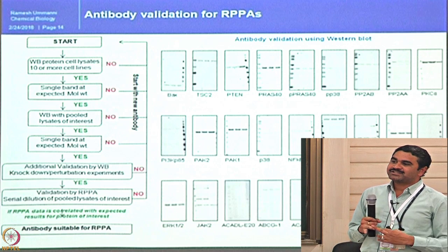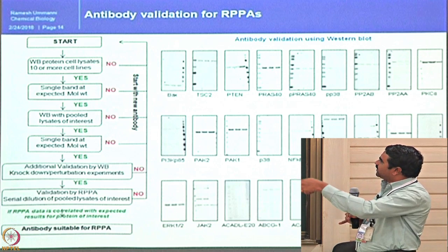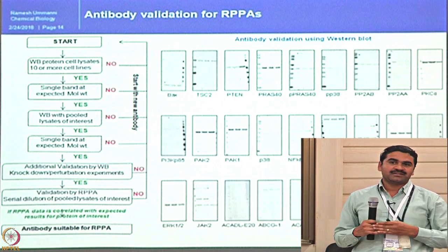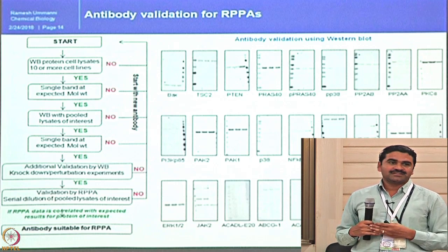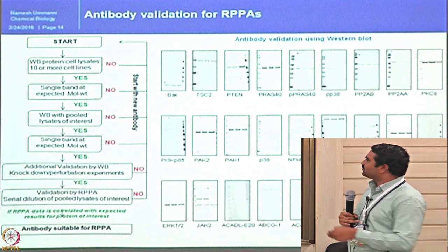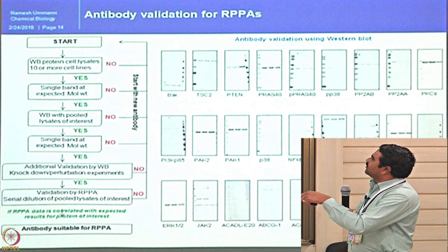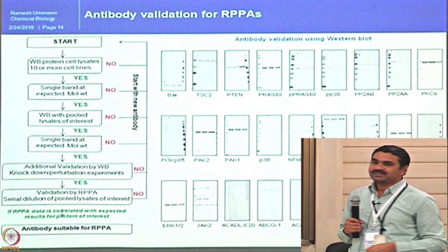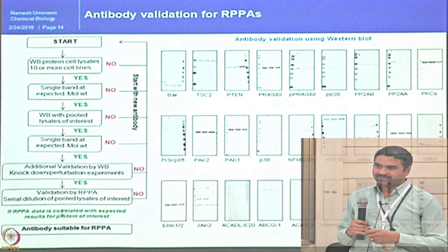If it gives a single band, it moves to additional validation steps — Western blot using knockdown experiments and stimulation experiments. If it passes, it goes to RPPA validation where we assess whether the antibody detects serial dilutions (2-fold, 5-fold, 10-fold) properly. If the RPPA data correlates with expected results for the protein of interest, we declare it useful for RPPA. Each antibody receives one of three codes: go ahead, use with caution, or not suitable.